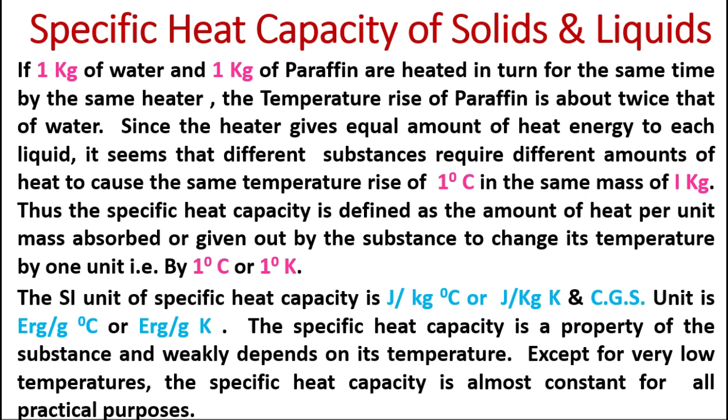The SI unit of specific heat capacity is joules per kg per degree centigrade, or joules per kg per degree Kelvin. In CGS, the unit is erg per gram per degree centigrade, or erg per gram per degree Kelvin.